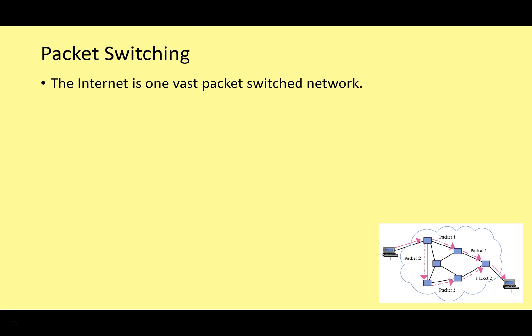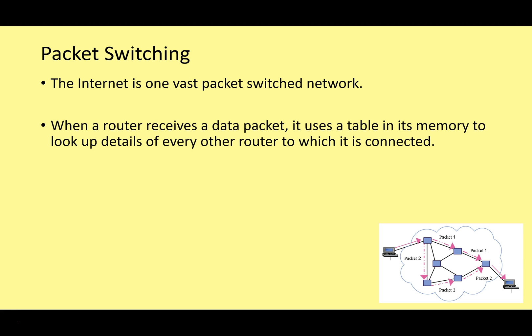The internet is essentially one vast packet switching network. When a router receives a data packet, it uses a table in its memory to look up details of every other router to which it's connected. It knows which routers it's directly connected to and doesn't need to know about the rest of the network — just its immediate connections.